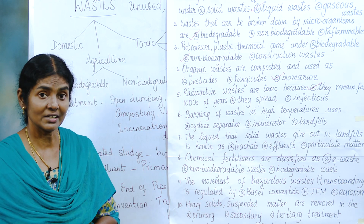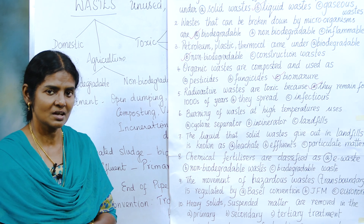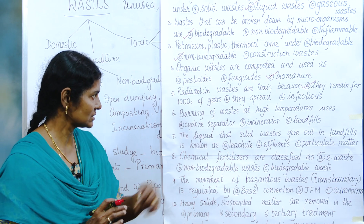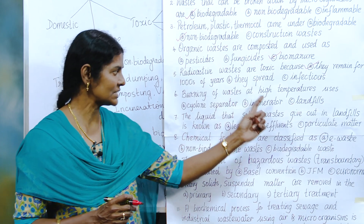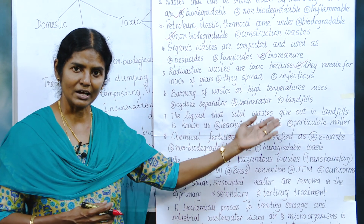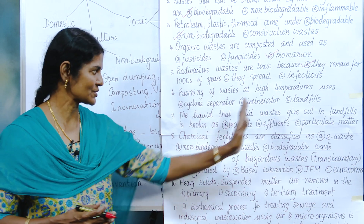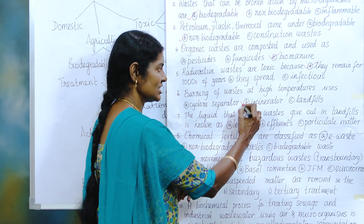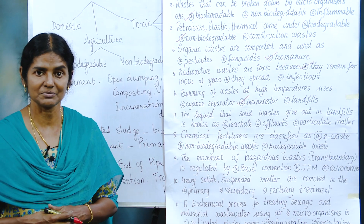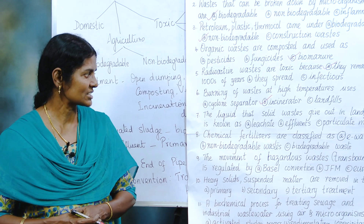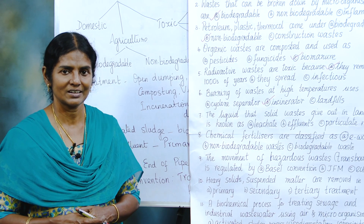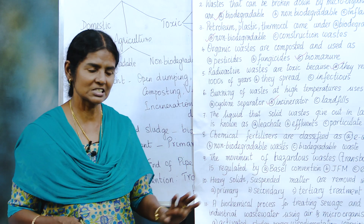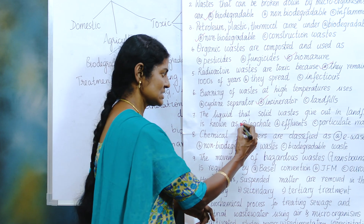Burning of waste at high temperatures — this is the waste treatment used for non-biodegradable waste. The three options are cyclone separator, incinerator, and landfills. Do landfills use high temperatures? No — ruled out. Does a cyclone separator use high temperatures? No. So the only thing that uses high temperature is the incinerator. The liquid that solid waste gives out in landfills is called leachate — remember this word.